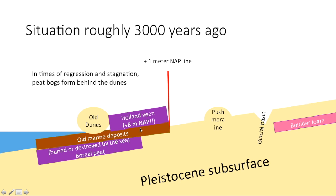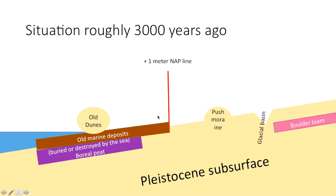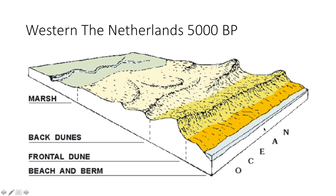That other deposit is a marsh — the Holland Veen. Here is the North Sea, then the dry beach, then the dunes, and behind the dunes there is a marsh. The western Netherlands was covered in marsh because the water that falls there cannot get to the ocean quickly, since the ocean is rising as well.